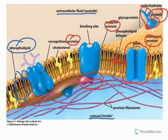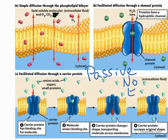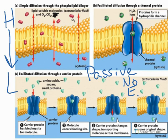Moving on to transporting materials across the membrane. There are two basic types of transport that move things across the membrane. First, we are going to go over passive transport. All of these forms of passive transport have no energy requirement — the cell can just do this without exerting any type of effort. The direction is always down the concentration gradient, from an area of high concentration to an area of low concentration.